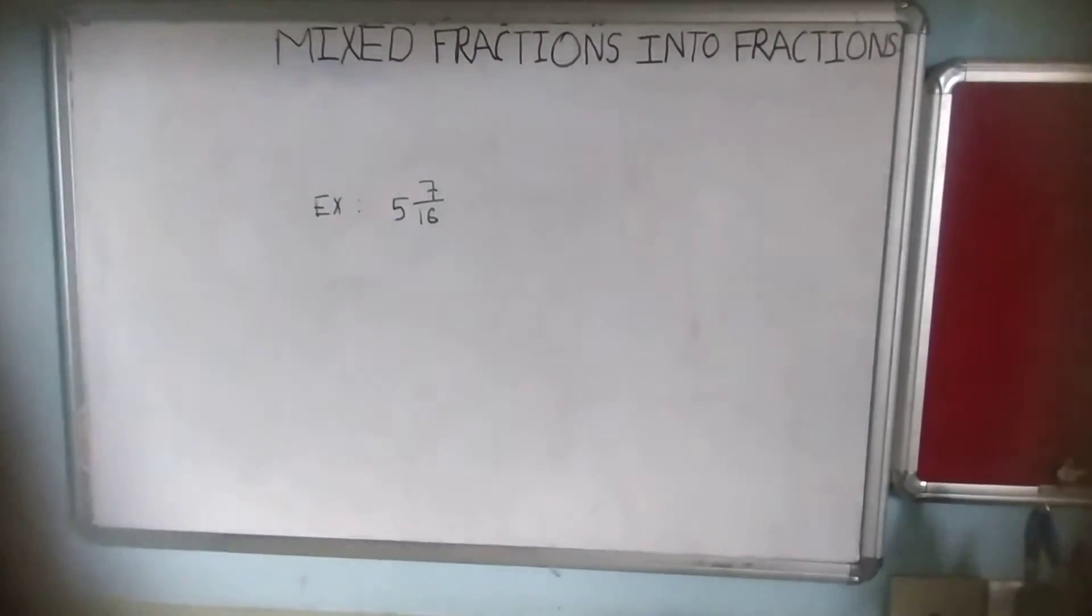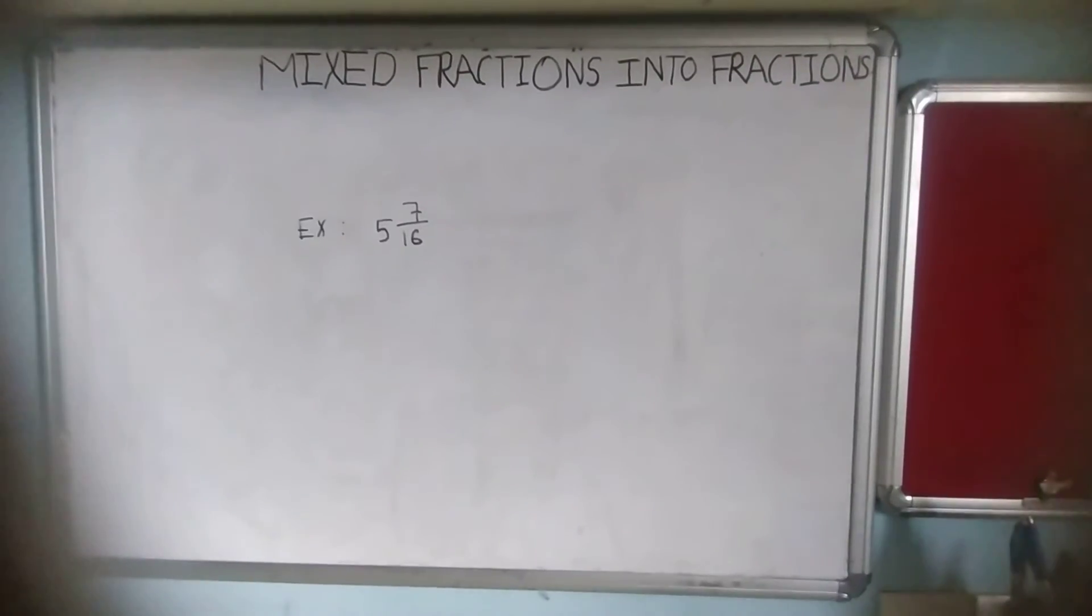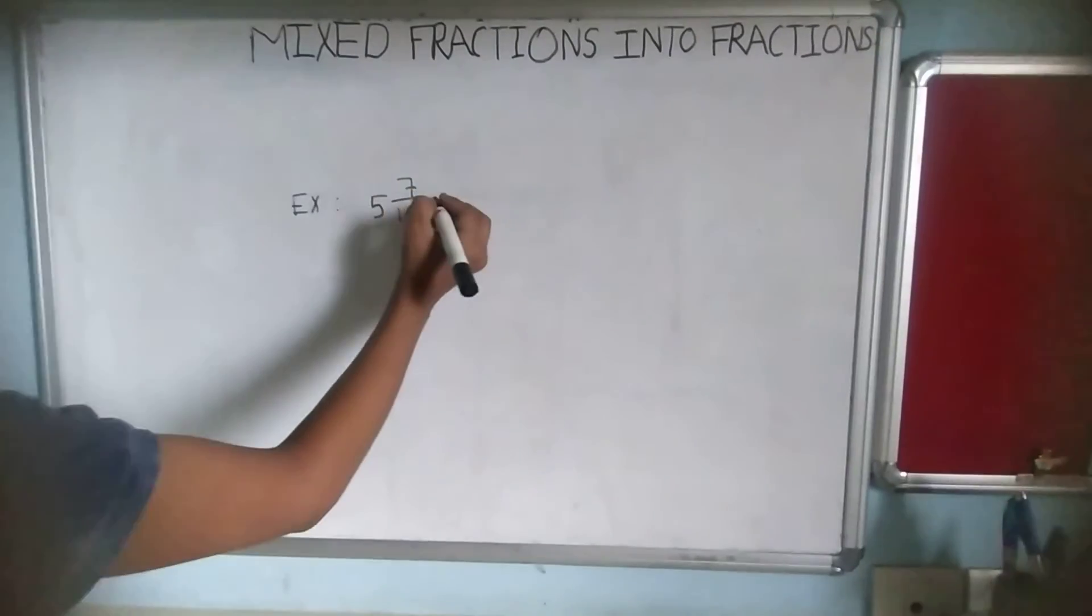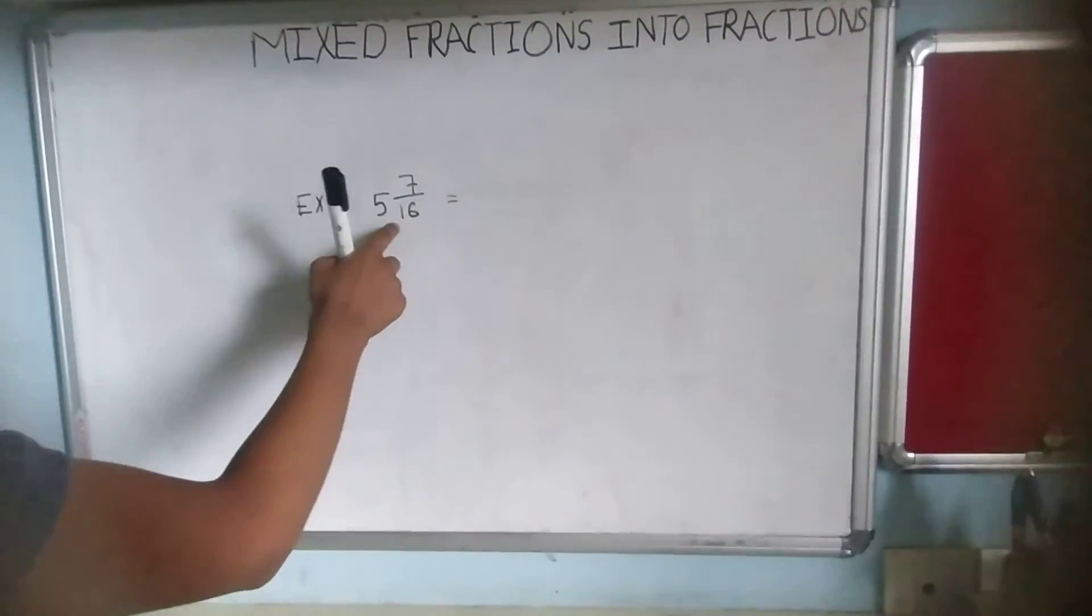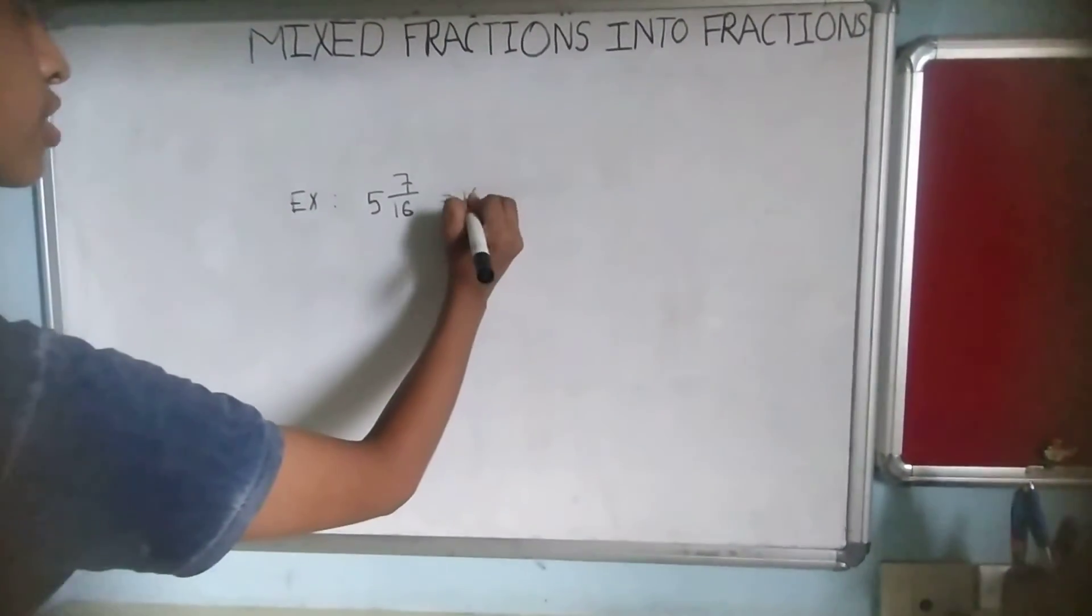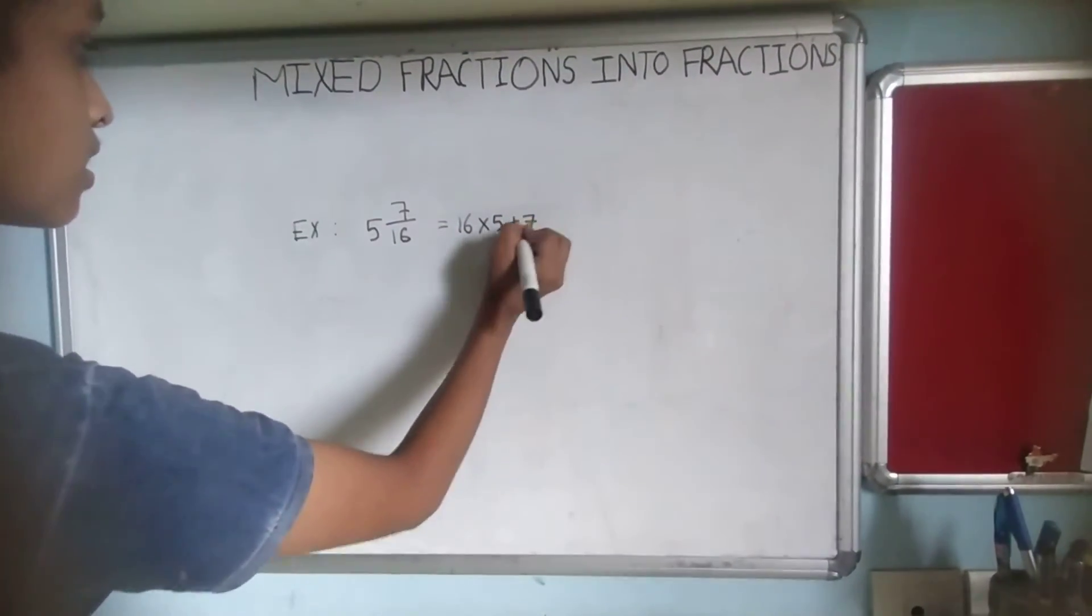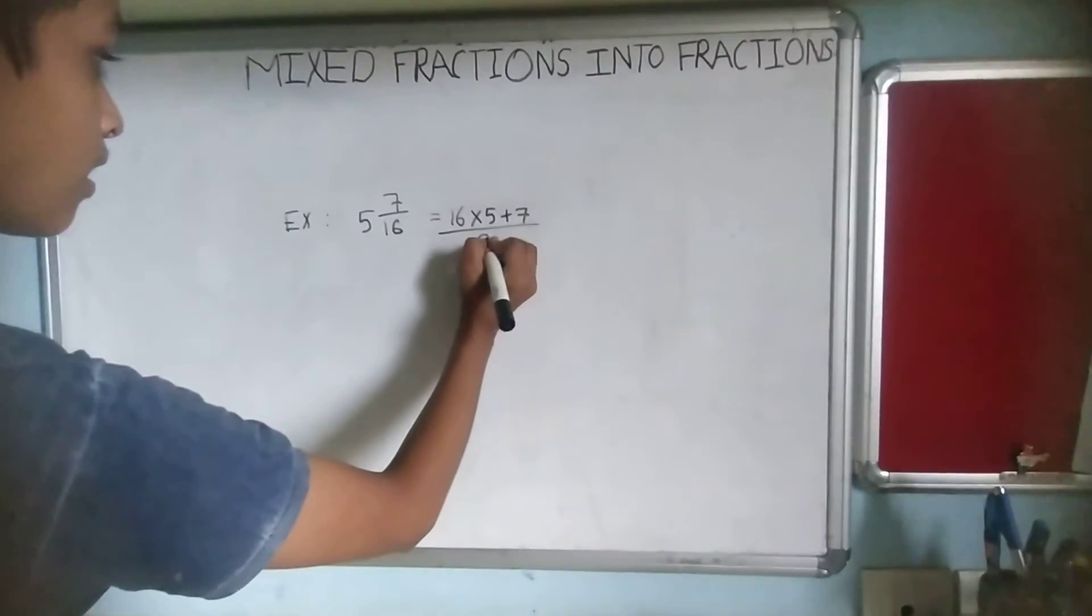Now the third and the last example is 5 and 7 by 16. Now we will start. 16 multiplied by 5 plus 7 by 16.